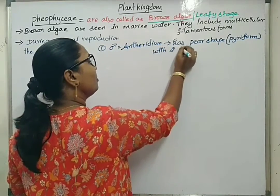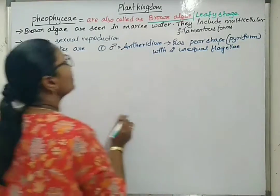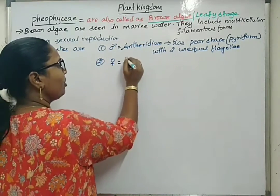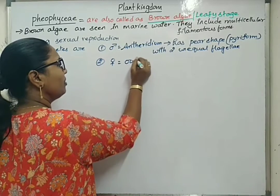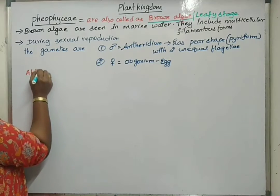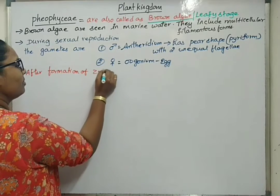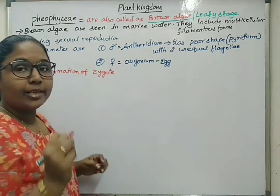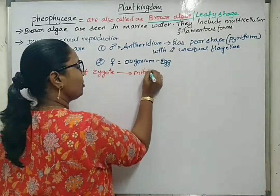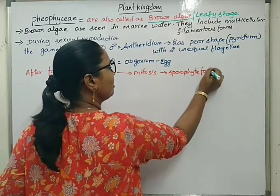The male gamete has two unequal flagella. The female gamete is called oogonium or egg. After formation of the zygote, the zygote undergoes mitotic division to give out sporophyte.